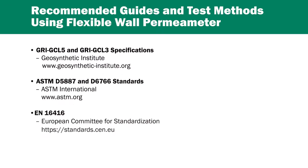So how should we verify the hydraulic conductivity? We can refer to standard guides and test methods that use a flexible wall permeameter. This apparatus allows the user to control the hydration process, the confining stress, and the head pressure placed on the geosynthetic clay liner. The hydraulic conductivity of a sample is measured under more representative boundary conditions that can more closely model the project conditions.